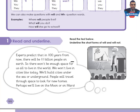Hello again. I'll underline the short forms of 'will' and 'will not' to check your answers. Here we have 'won't', 'won't', 'won't', and 'we'll' — that means 'we will'. Then 'will', 'will', 'will', and 'will'.